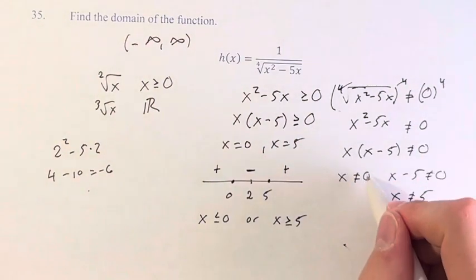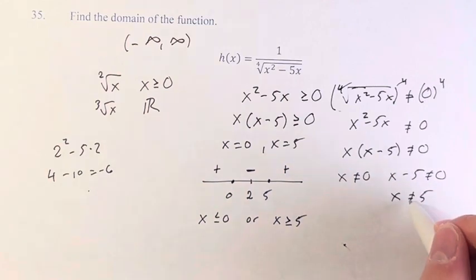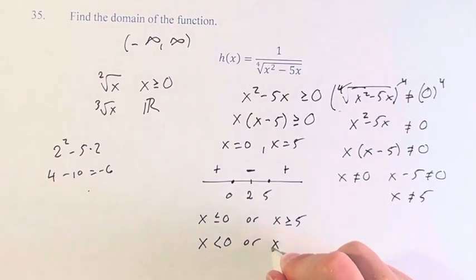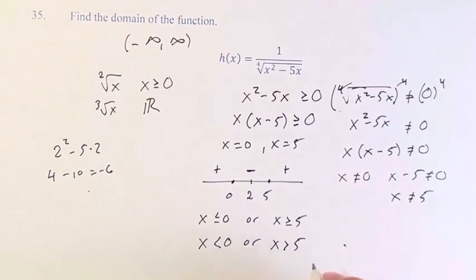However, we know that it cannot be equal to 0 and it cannot be equal to 5, so these become x is less than 0 or x is greater than 5. This is equivalent to negative infinity to 0, union with 5 to infinity, representing the same information, the domain of the function h of x.